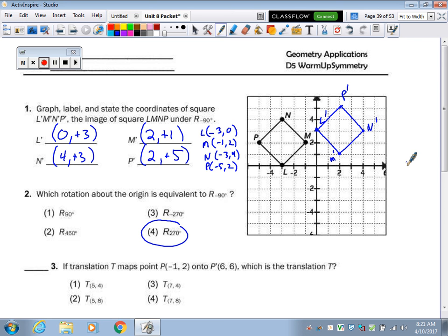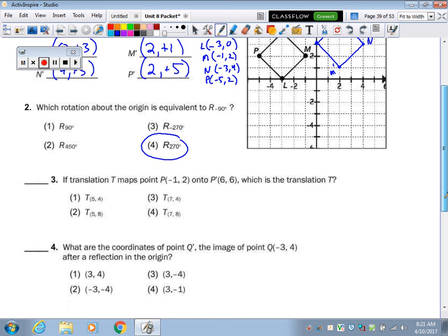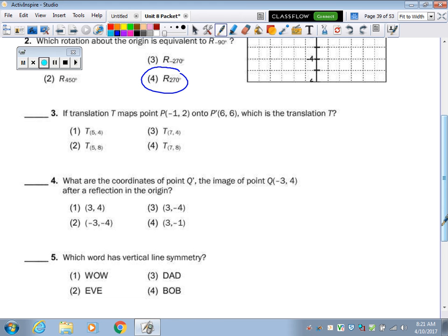So it should stay the same shape, stay the same size, because reflections, rotations, and translations are all isometries.